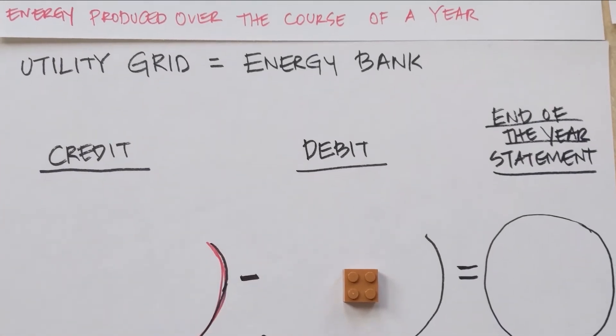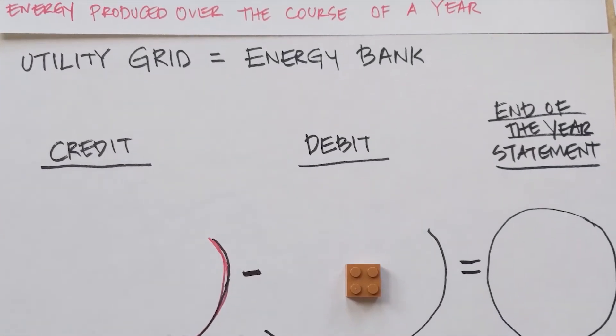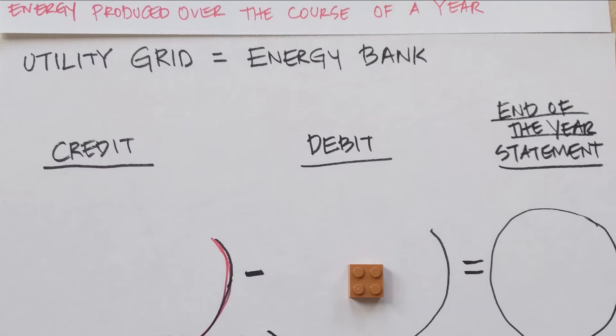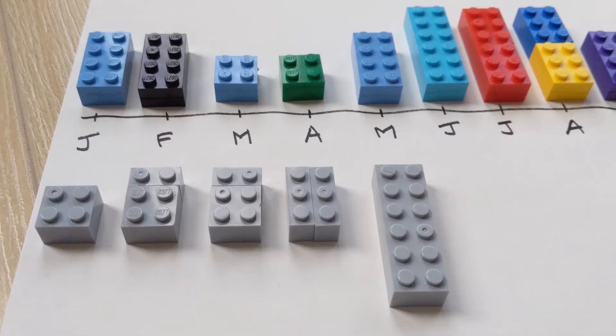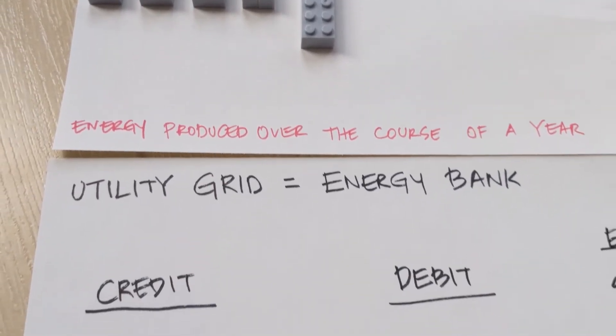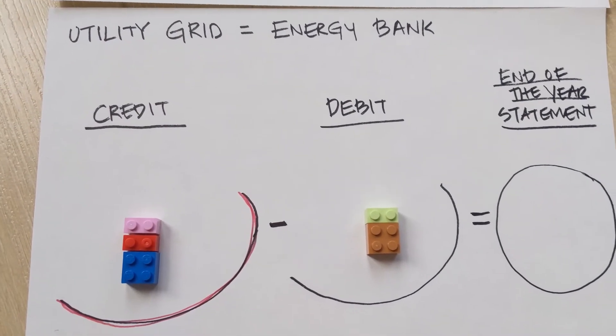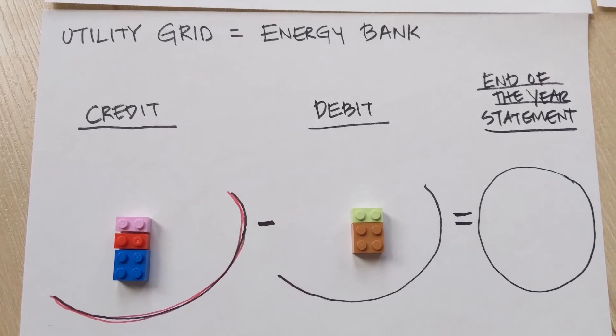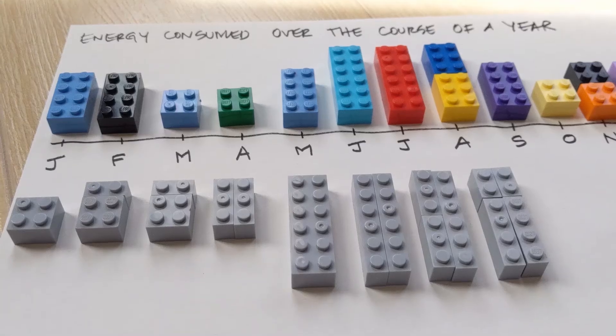What is debit? Debit means we are borrowing from the electricity grid, one of the units that we didn't make. Then, another month, we make more energy than we use. Then, that's called credit. Which means we are giving back the energy to the electricity grid. Right? Yes.